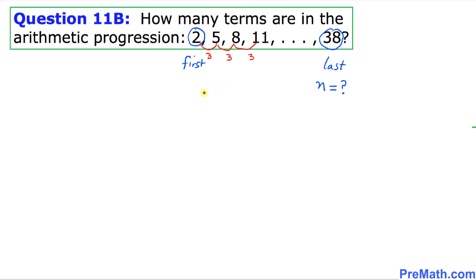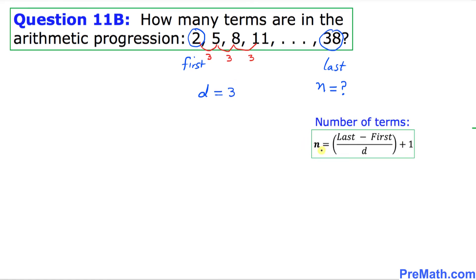That means our common difference d equals 3. And now to find the number of terms we will be using this formula: n equals the last term minus the first term divided by the common difference d and then add 1 to it.